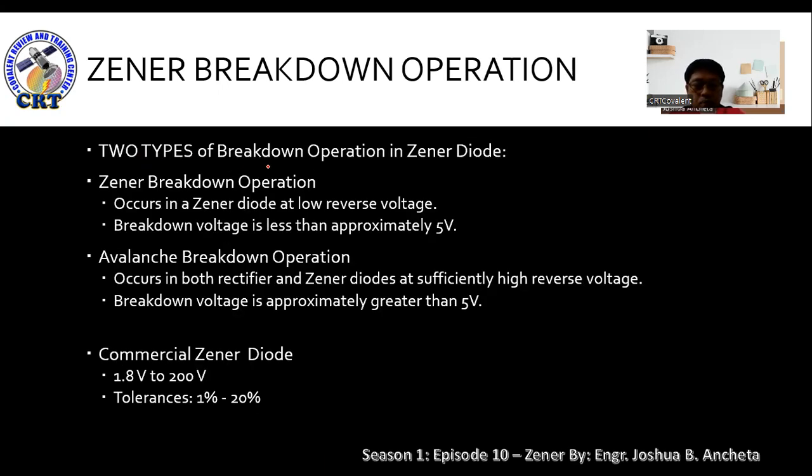There are two types of breakdown operation in Zener. Zener breakdown operation occurs in a Zener diode at low reverse voltage. The breakdown voltage in this operation is less than approximately 5 volts. Avalanche breakdown operation occurs in both rectifier and Zener diode at sufficiently high reverse voltage. The breakdown voltage for this operation is approximately greater than 5 volts. Commercial Zener diodes are available from 1.8 up to 200 volts with tolerance of 1% to 20%.